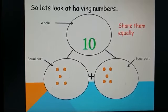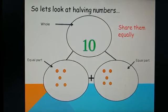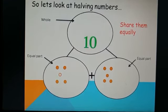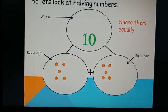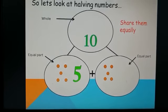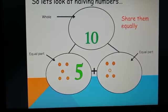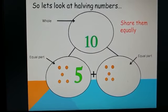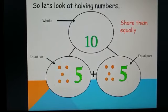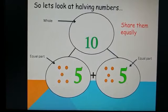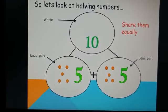I now need to count to make sure I have the same amount of counters in each group. One, two, three, four, five. I have five counters in the first group. One, two, three, four, five. And I have five counters in my second group. So I have successfully shared 10 counters equally in half.